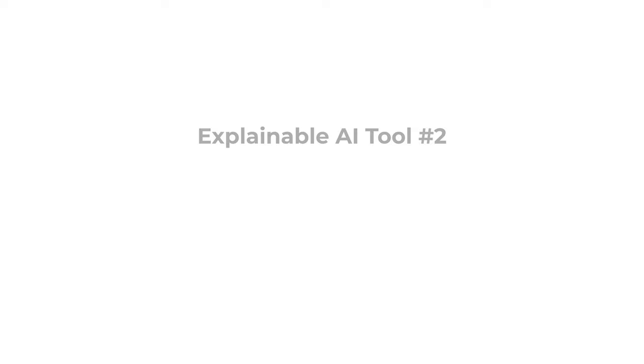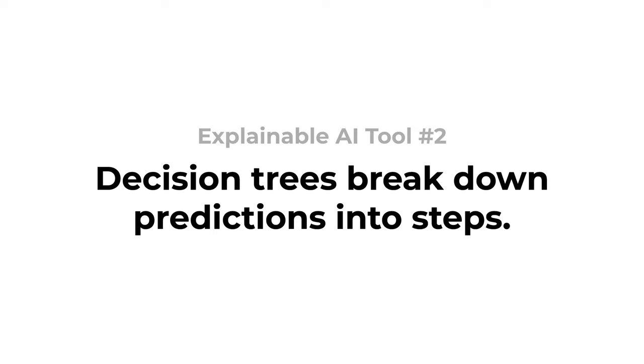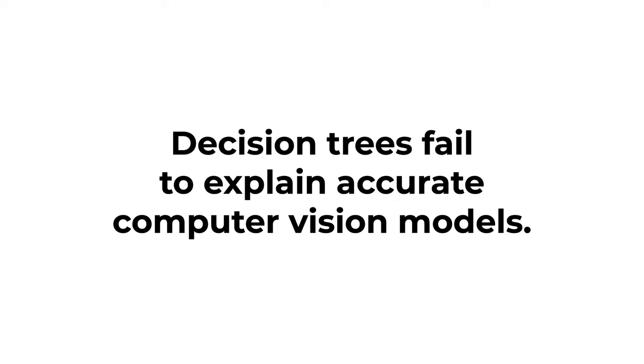Explainable AI tool number two: decision trees break down predictions into steps. For example, here's a decision tree. Instead of only predicting cat, this model makes intermediate decisions we can understand. However, decision trees are 40% less accurate than neural networks. In other words, decision trees fail to explain accurate computer vision models — interpretable, but inaccurate.